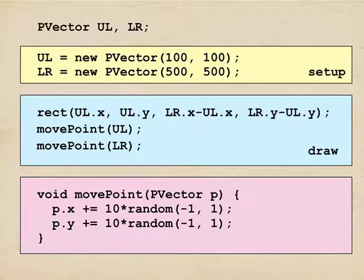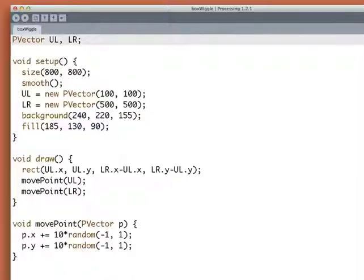With just a few extra lines, we can turn this into a working piece of code. So let's do that and run it. Here's the whole program. It's what we just saw, except that there's a few extra lines in setup to create the graphics window, call smooth, and set the colors. So let's run it.